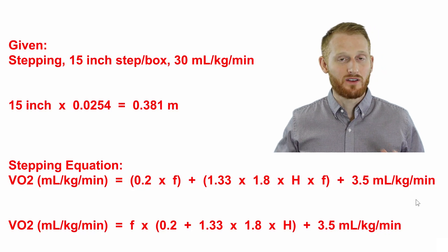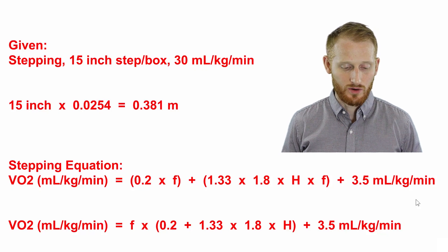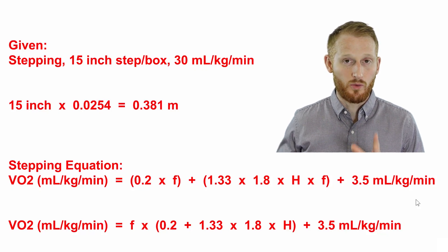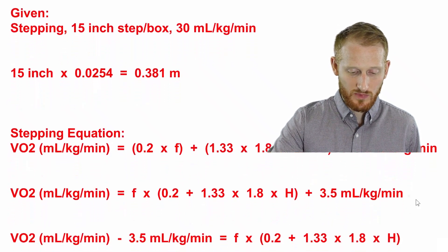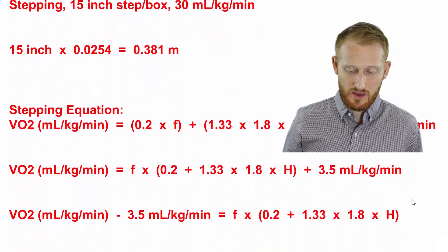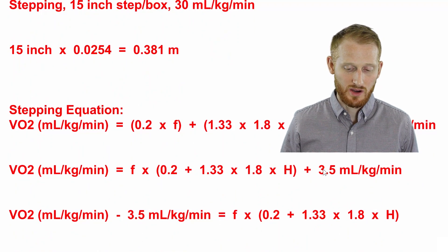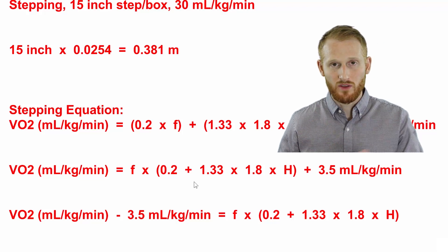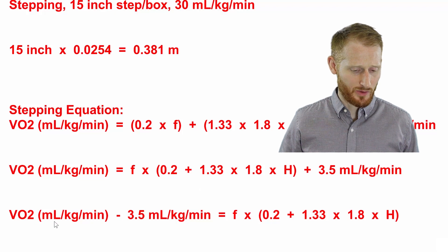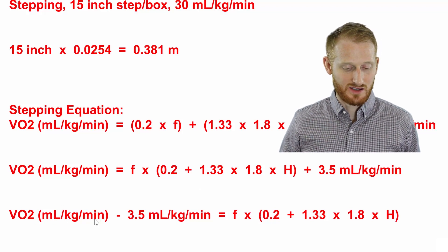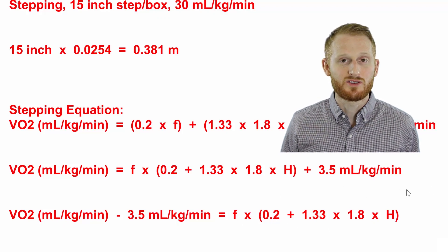Now that we have only a single f in the equation, we can start rearranging the equation further to isolate the f on one side away from everything else. First thing we're going to do is get rid of the plus 3.5 at the end by subtracting 3.5 from both sides of the equation. So we end up with oxygen consumption minus 3.5 equals everything else left on the right side of the equation.